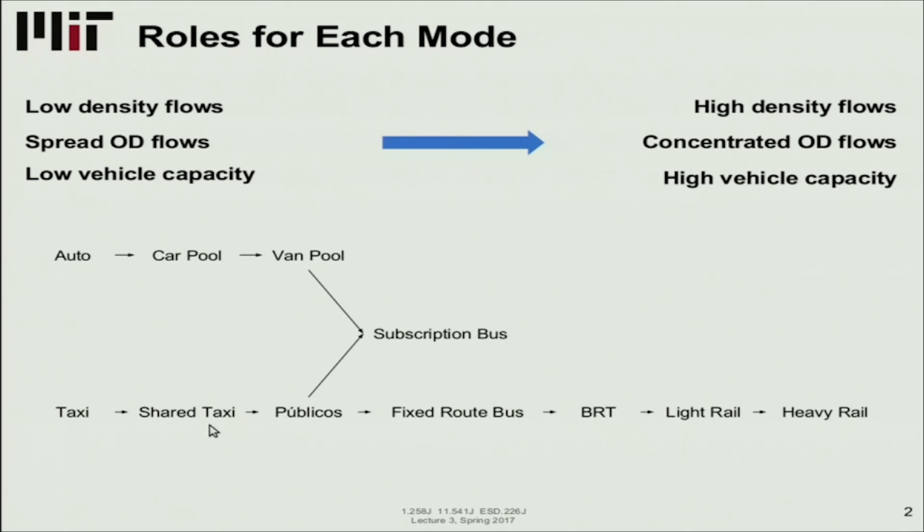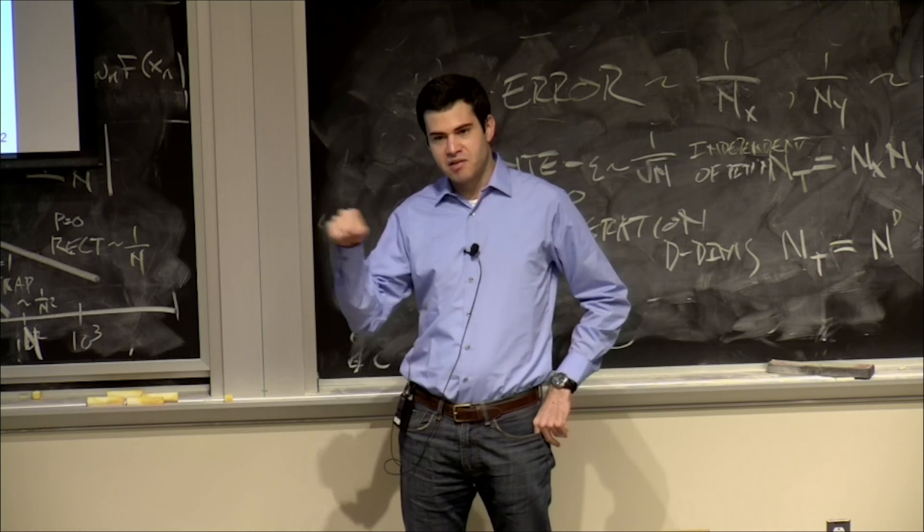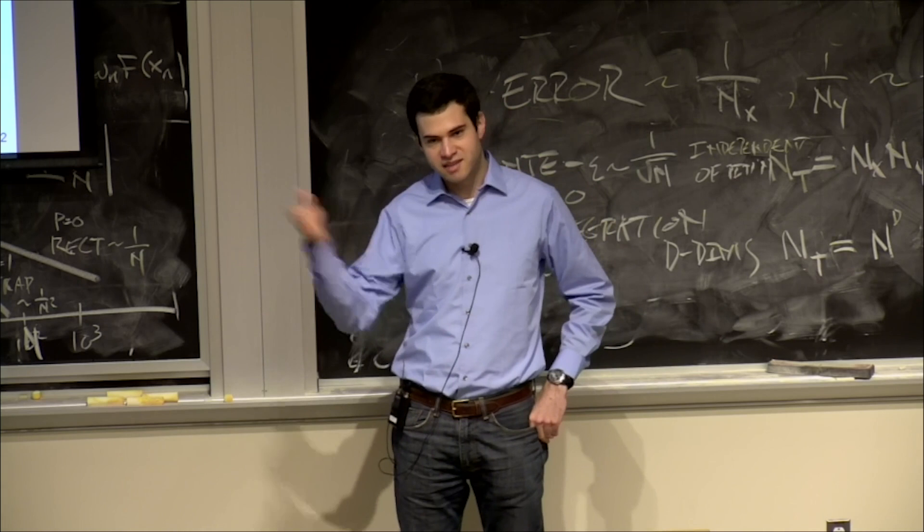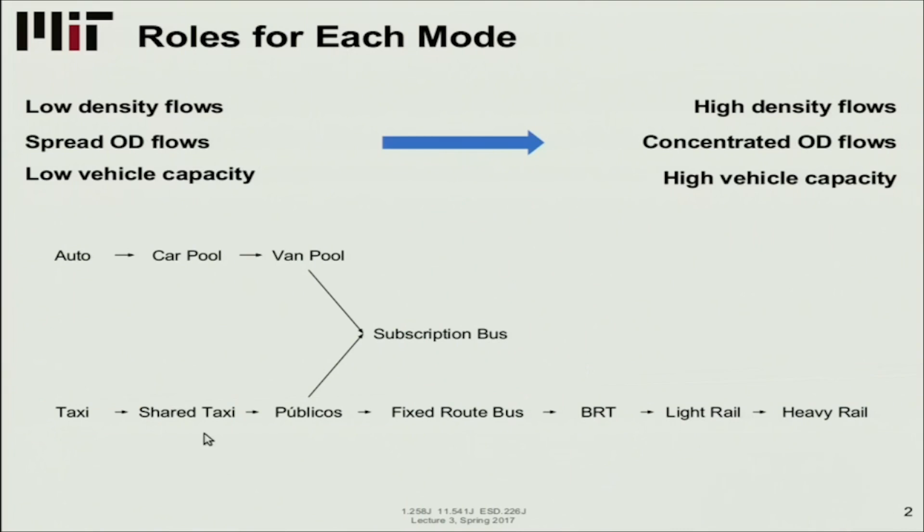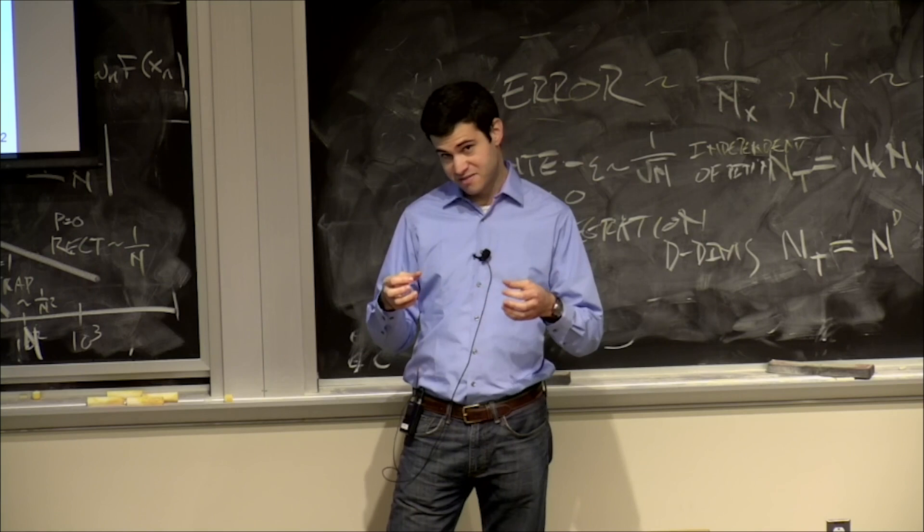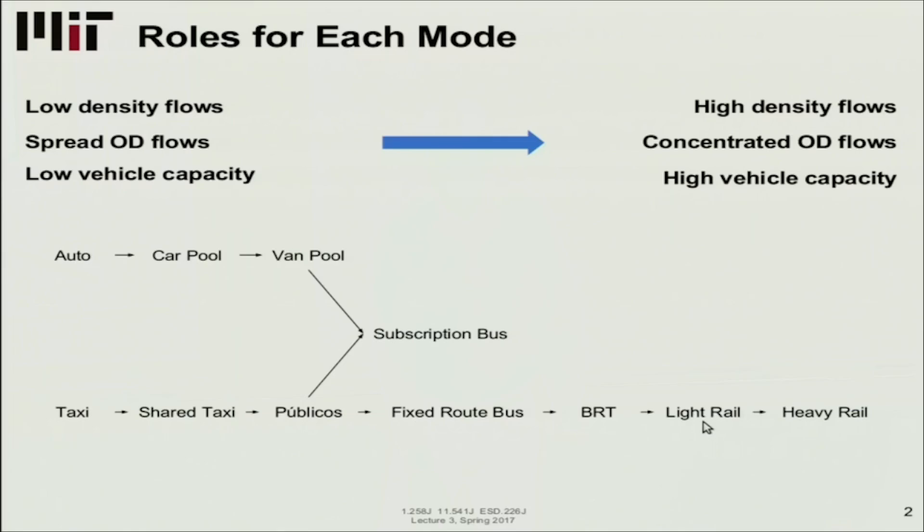On the public side, we have taxi. I'm using the term generally, so you can think of transportation network companies like Uber and Lyft. You might hail a cab just for yourself, or use pool services. Then we have publicos, which can be cars or vans operated by a private driver, often in an association. They usually drive along semi-flexible, semi-fixed corridors. People more or less know the routes they serve. They can say, can you take me around the corner? And they'll do that. It's the mode right before formalized public transportation.